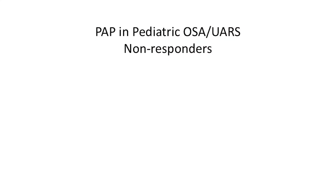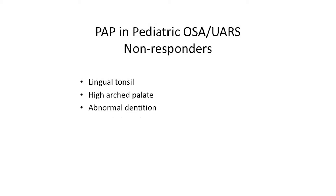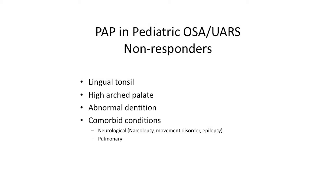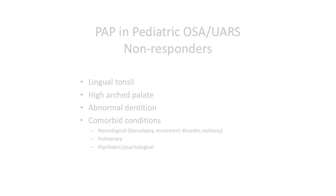Non-responders: if a child is placed on CPAP after ENT and orthodontic options have been explored and they still don't respond, always question the presence of a lingual tonsil — especially if the child has Down syndrome — or poor nasopharyngeal growth, high arched palate, or abnormal dentition. There may also be undiagnosed comorbid conditions: narcolepsy or other hypersomnic disorders, untreated epilepsy, pulmonary disorder or hypoventilation (in which case they should be on BiPAP, not CPAP), or psychiatric and psychological causes such as atypical depression, mood disorder, or seasonal affective disorder.